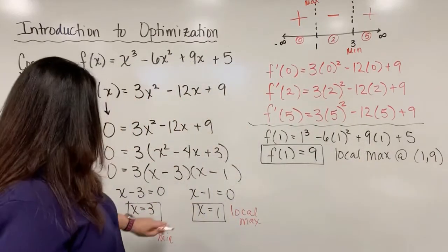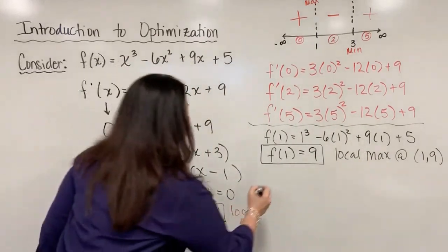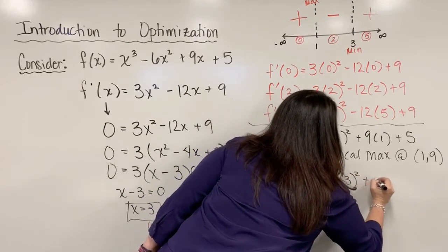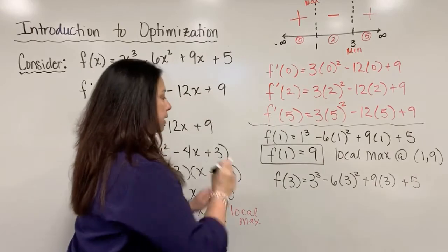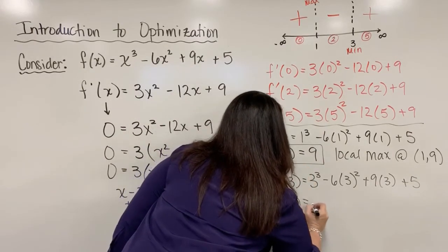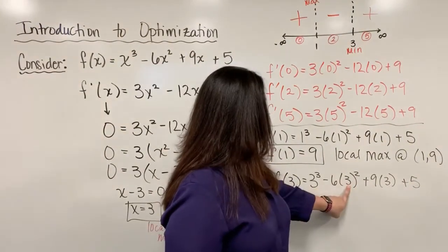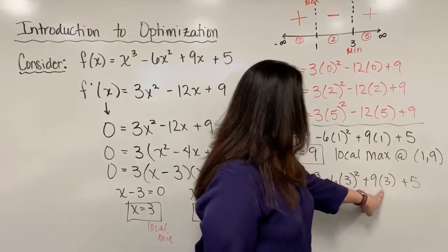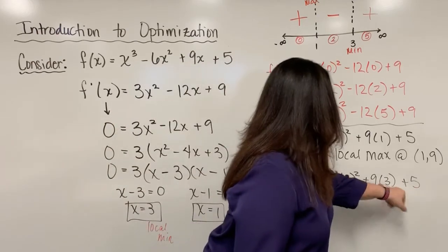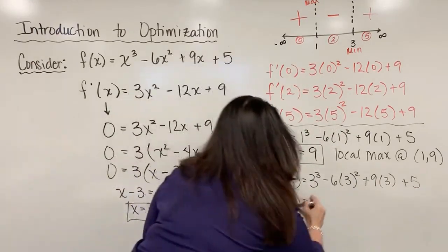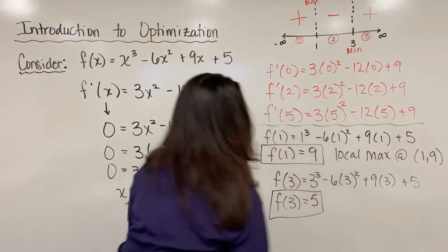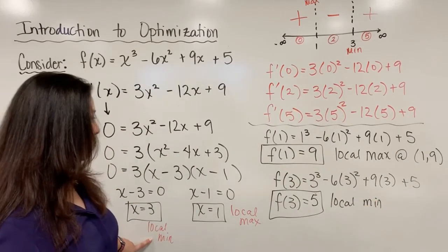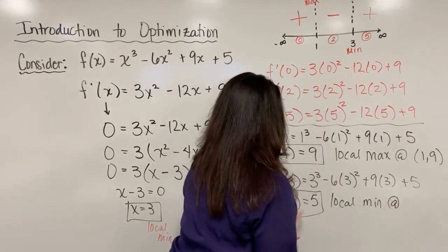Okay. And then lastly, we would do the same process for x equals 3. So we have f of 3 is equal to 3 cubed minus 6 times 3 squared plus 9 times 3 plus 5. And I just need to calculate all of these values. And when I do, let's see, I get 27. Here, I'm going to have 3 squared is 9, but times negative 6, so negative 54, and then plus 27 and plus 5. And this gives you just 5. So now we have a local minimum because we decided that x equals 3 is a local minimum. We have a local minimum specifically at the point 3 comma 5.